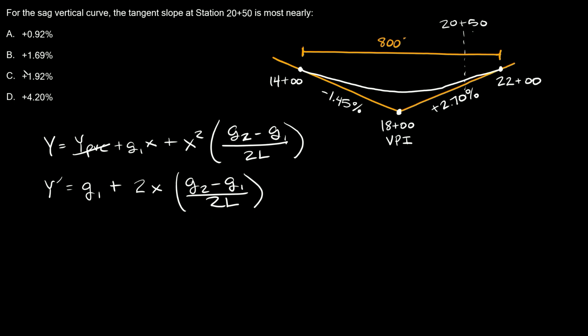Now one thing we can still do here to simplify this a little bit is cancel out these 2s. We have a 2 on top and 2 on the bottom, so I can rewrite this one last time as G1 plus X times (G2 minus G1) all over L.